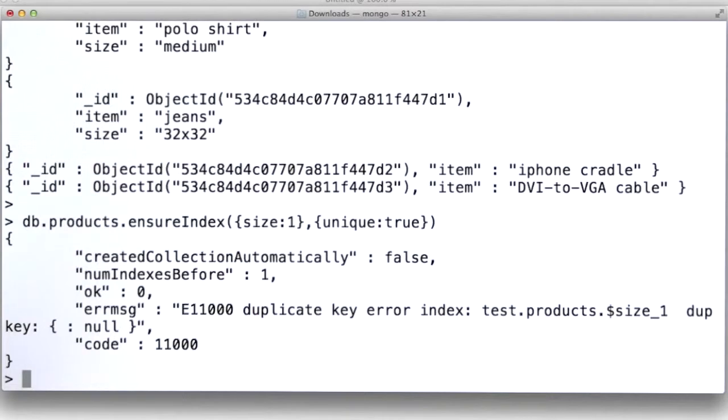We get an error because there are two documents in this collection that don't have a size and that both map to having a size of null. That is going to be a duplicate key because you can't have null in the collection more than once.